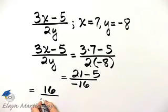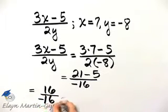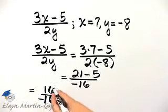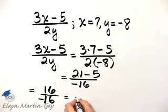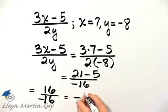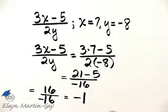So I have 16 divided by negative 16. That's a positive divided by a negative, which is negative. And 16 divided by 16 is 1. So my result is negative 1.